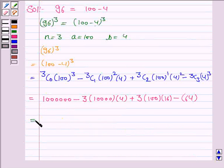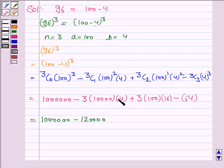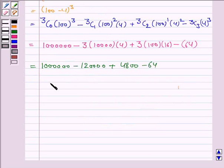This equals 1,000,000 minus 120,000 plus 4,800 minus 64. Simplifying this, we get 884,736.